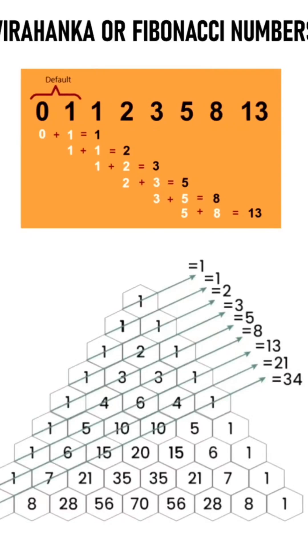This is the amazing concept of Virahanka or Fibonacci numbers. As you can see, the first two numbers here, 0 and 1, are the default numbers in the series.